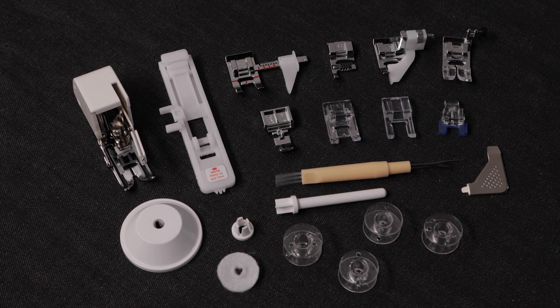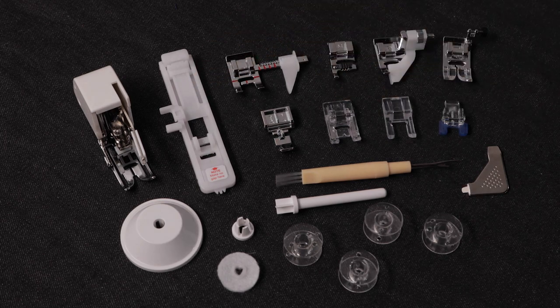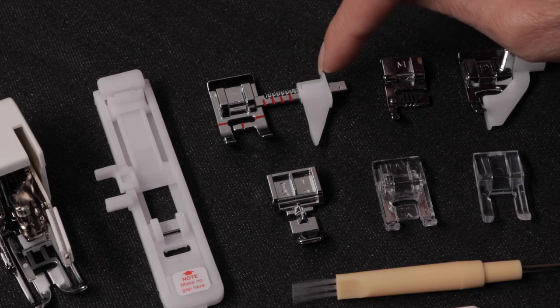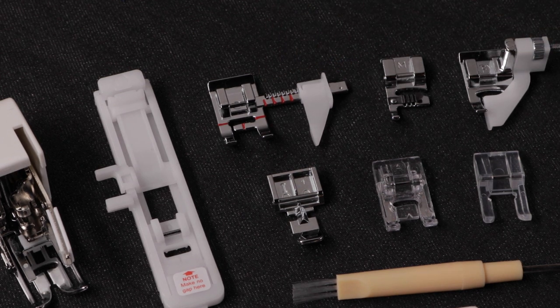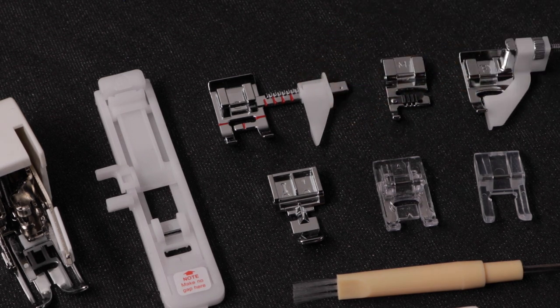This is a buttonhole foot for sewing buttonholes. This is the sew easy foot and it has an adjustable guide here at the side so you can set it for the seam allowance width that you want for your project. It'll give you a nice edge to guide the edge of your fabric along as you sew your seams.